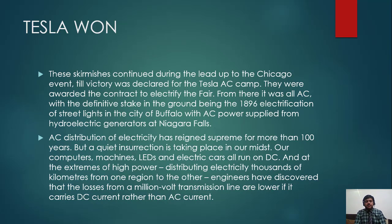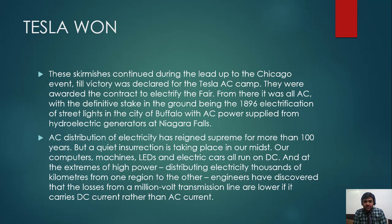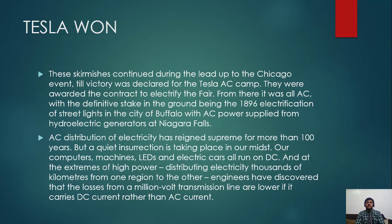But a quiet insurrection is taking place — our computers, machines, LEDs, and electric cars all run on DC. You cannot ignore Edison: your laptops, LED TVs, and electric cars everything is DC. At the extreme of high power, engineers have discovered that losses from a million-volt transmission line are lower if it carries DC rather than AC current, because both capacitive reactance and inductive reactance are simply gone in DC, so losses are less.